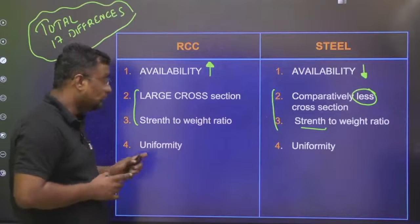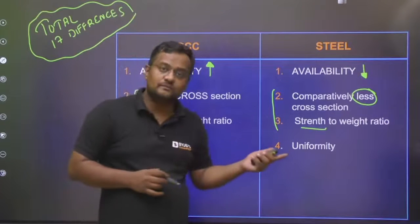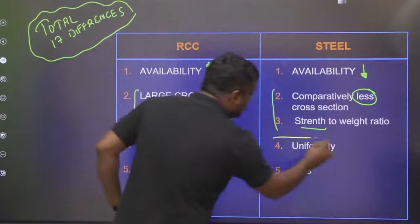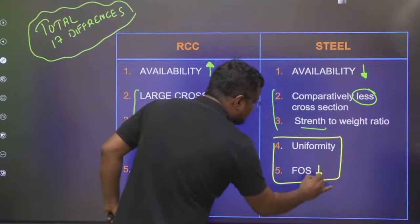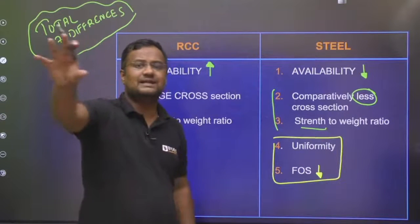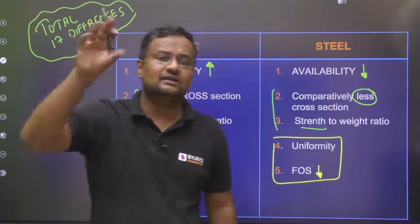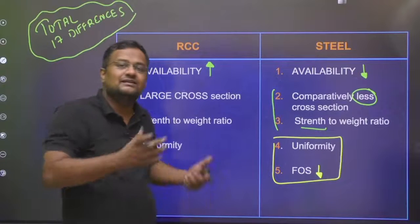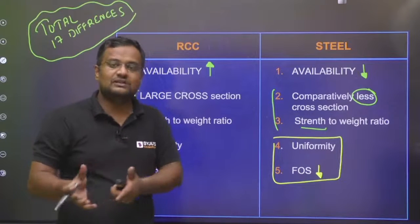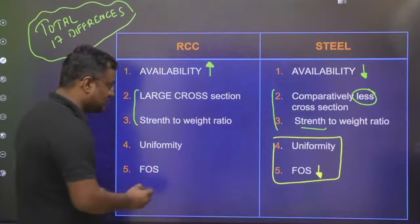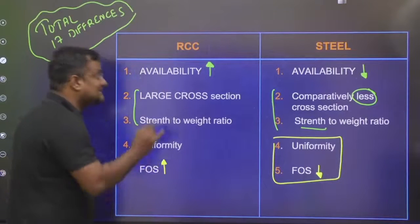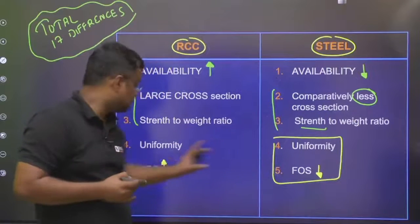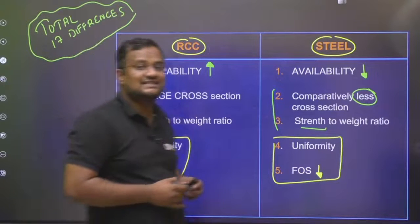Uniformity: steel is more uniform, and that is linked with factor of safety. Steel is more uniform, which is why the factor of safety required is lesser. If a plant says yield strength is 250 MPa, we are very sure it will be around 250. But concrete is sometimes made on-site by three laborers, so we are not very sure — that is why we use a higher factor of safety in RCC, whereas a lesser factor of safety is used in steel.